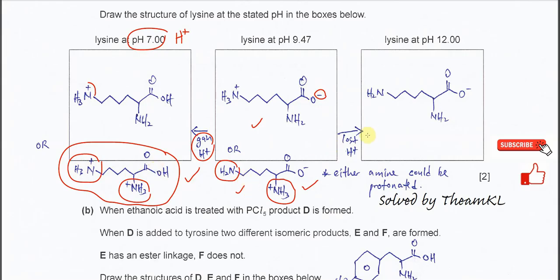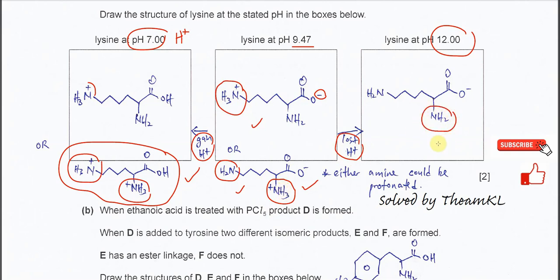Now moving to the higher pH. pH 12 is relatively alkaline compared to pH 9.47, so the dipolar ion needs to donate — lose — a proton. The ammonium group loses one proton to form the amine. So at pH 12 the structure has an amine and a carboxylate. This is how you compare the isoelectric point with different pH values — different structures form at different pH levels.